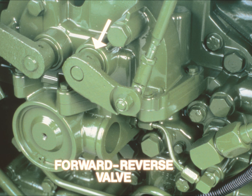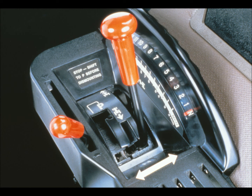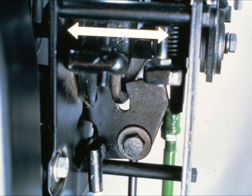We'll begin with the forward-reverse valve, because it's one of the first valves in the control circuit. We'll describe the other valves in roughly the order that they affect oil flow. As you might expect, the forward-reverse valve determines if the transmission goes into forward or reverse. The valve is mechanically linked to the transmission control lever. Moving the control lever from side to side shifts the forward-reverse valve between neutral-neutral, neutral-reverse, and neutral-forward. The linkage turns this side-to-side movement into an up-and-down movement at the valve.